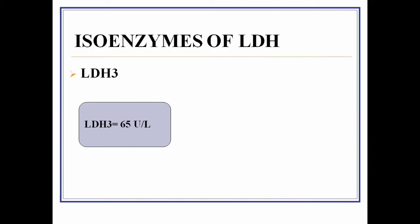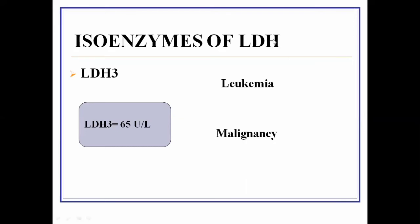An increased level above 65 units per liter indicates injury to brain or kidney cells. LDH3 frequently indicates pathologies such as leukemia, and more specifically Hodgkin's disease. It also indicates malignancy involving the brain and kidneys, as well as viral meningitis, which causes increased LDH3 levels in the blood.